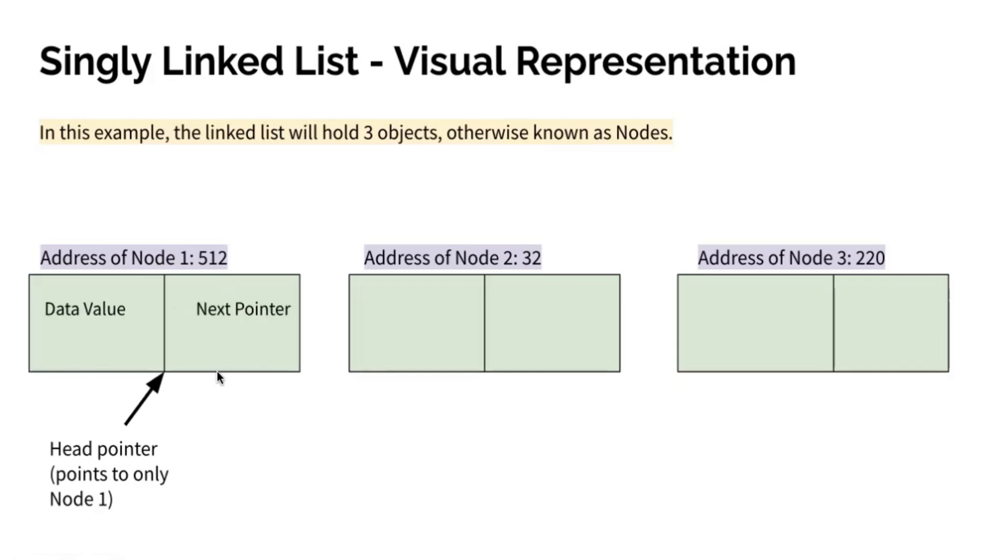And for each node, we will have a data value and a next pointer, a data value and a next pointer, and a data value and a next pointer.